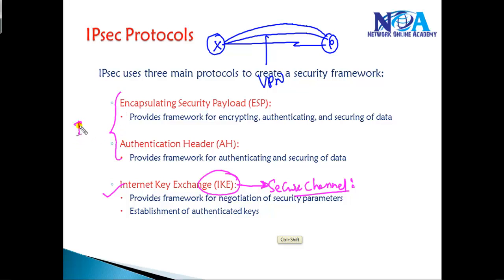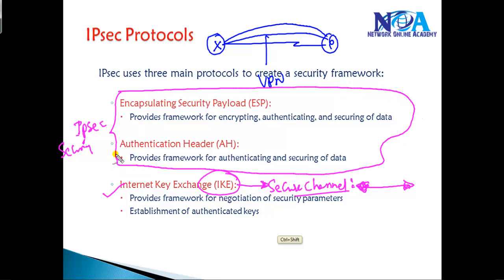ESP and AH are the actual IPSec protocols which provide the secure exchange of information. IKE builds a secure channel — like creating a tunnel — so that information can be sent securely. But ESP and AH are the actual protocols that provide the real encryption and authentication. The actual security is provided by ESP and AH, whereas IKE is the protocol that establishes the secure channel before the information is actually sent.